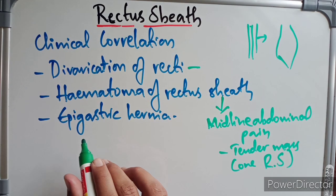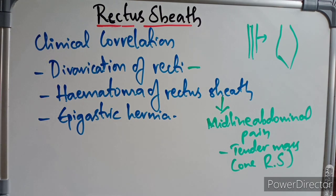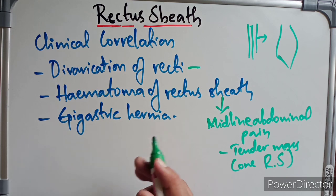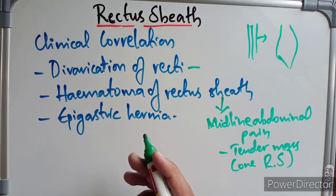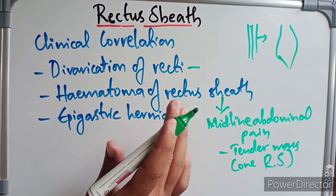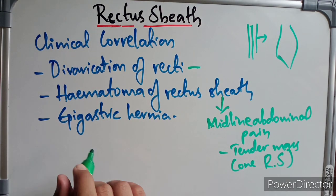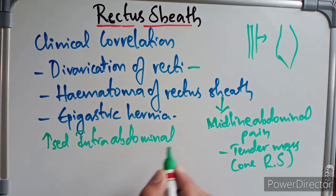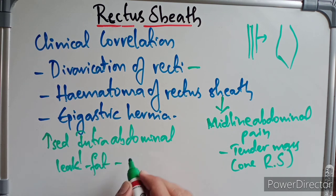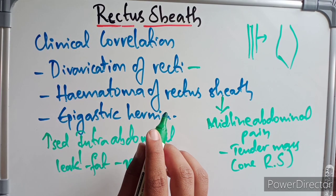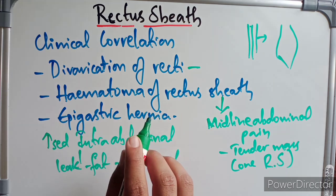Coming to epigastric hernia. The linea alba is the midline fibrous structure formed by the interlacing of aponeurotic fibers of the three flat muscles. Above the umbilicus it is wider — about one centimeter — and below the umbilicus it is very narrow. In elderly multiparous women who are chronically ill, the intra-abdominal pressure is severely raised. A small amount of extra-peritoneal fat may protrude through the upper part of the linea alba and eventually drag behind a small peritoneal sac, resulting in epigastric hernia. This mainly occurs below the umbilicus because the linea alba is thinner there.